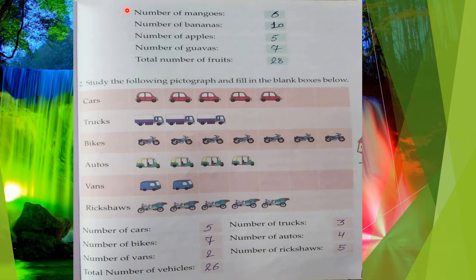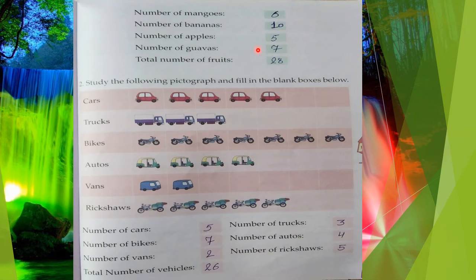The first data is number of mangoes — how many mangoes are there? Six mangoes. Number of bananas: 10. Number of apples: 5. Number of guavas: 7. And the total number of fruits is 28. When you count all fruits in that pictograph, the total is 28.